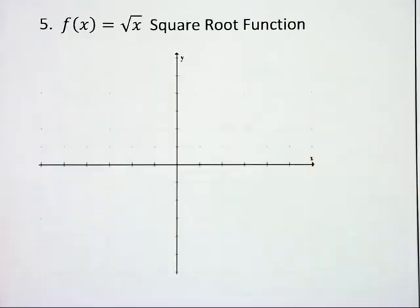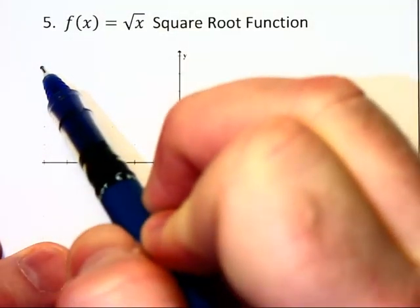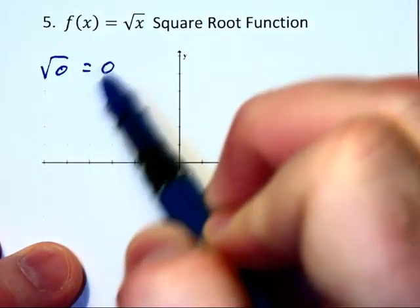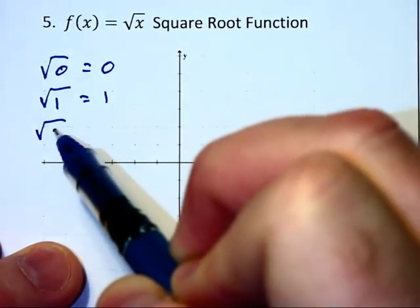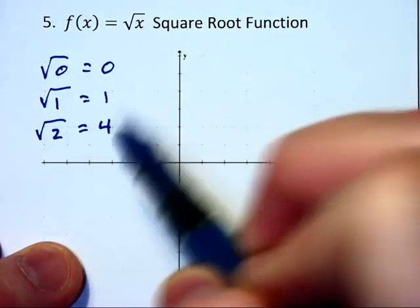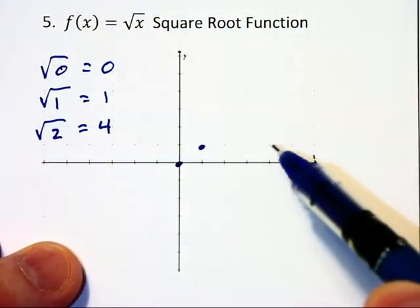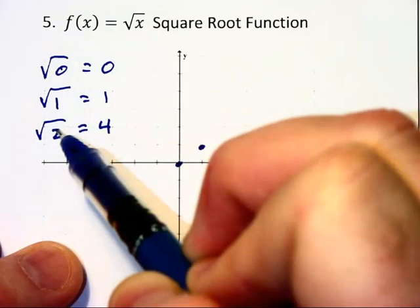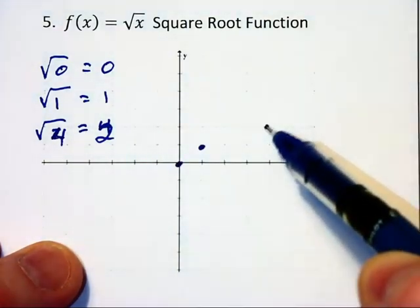y equals the square root of x. Now if you think about this, the square root of 0 is 0, square root of 1 is 1, square root of 2 is 4. So this graph is going to go through 0, 0, 1, 1, and sorry I should have said the square root of 4 is equal to 2. Let's go there, 4, 2.